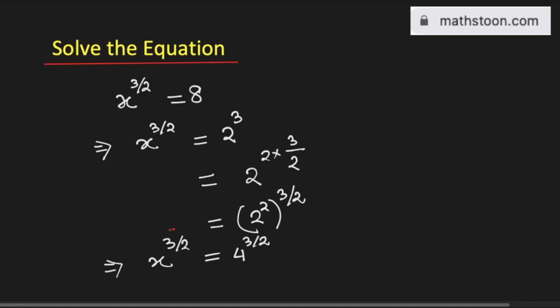As we have the same exponents in both the sides, so the base must be equal. That is x should be equal to 4. And this is the final answer of the given exponential equation.